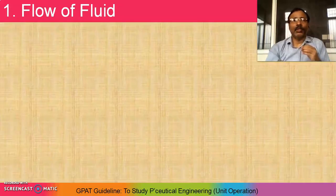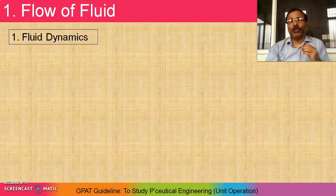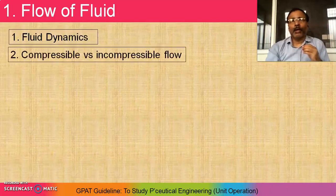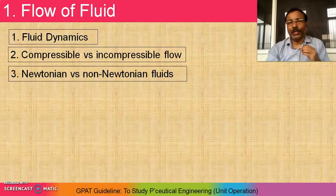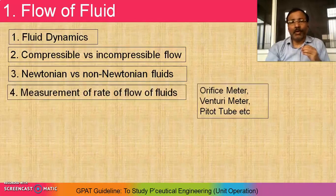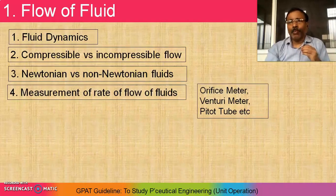First, flow of fluid. What to cover in flow of fluid? Fluid dynamics — we have to cover the concept regarding fluid dynamics. Then, compressible versus incompressible flow, that is the comparison between two types of flow. Then, Newtonian versus non-Newtonian flow, which we already studied in physical pharmaceutics. Check out the measurement of rate of flow of fluids — that is the orifice meter, venturi meter, and pitot tube. Check out on what principle they are based and in what condition they are used — check out their applications.